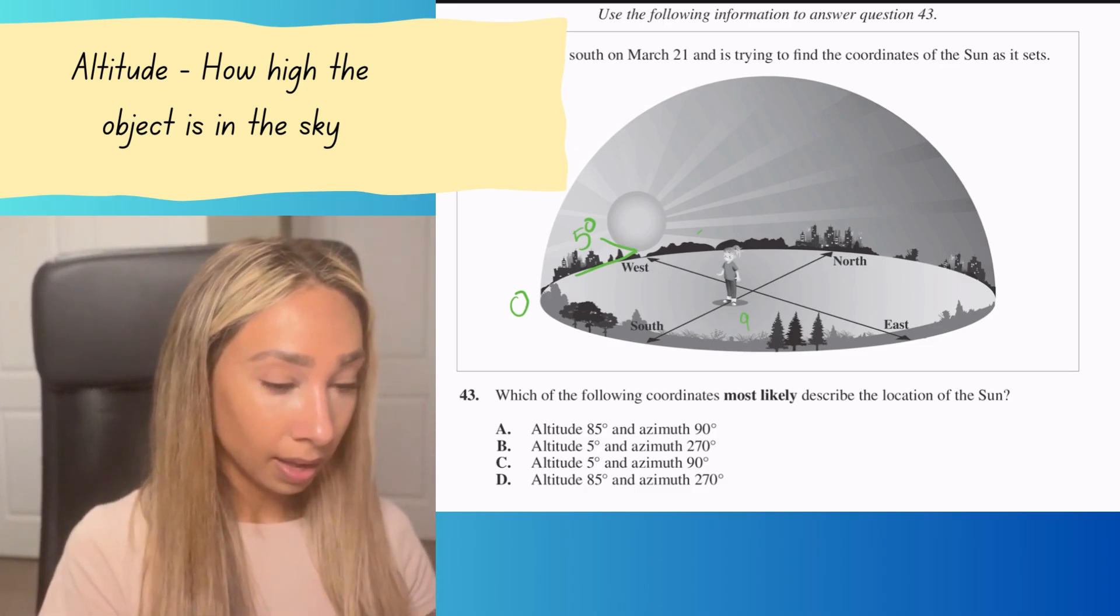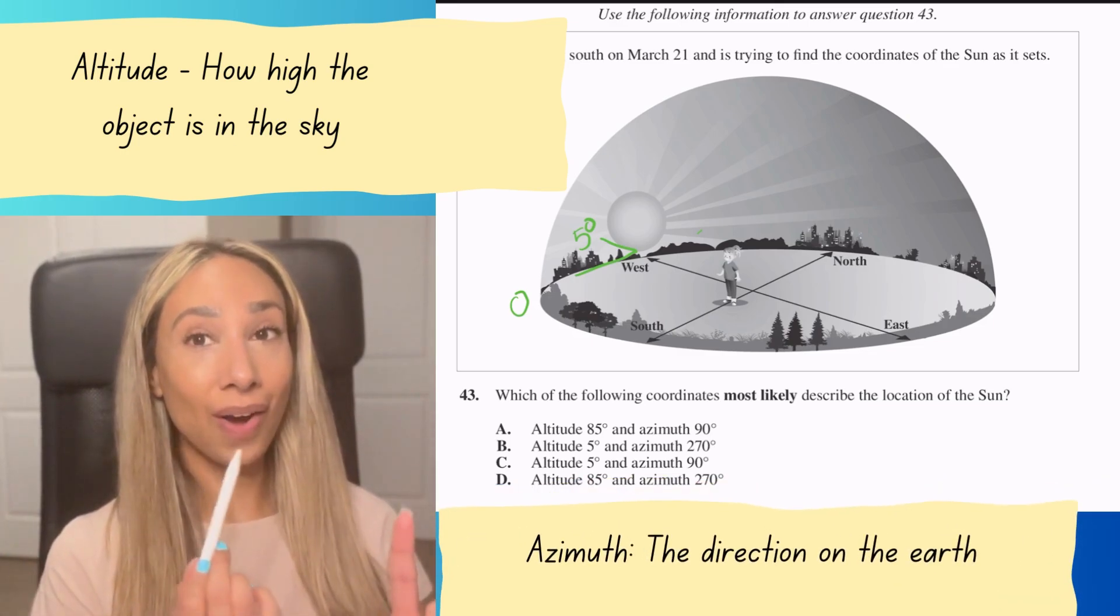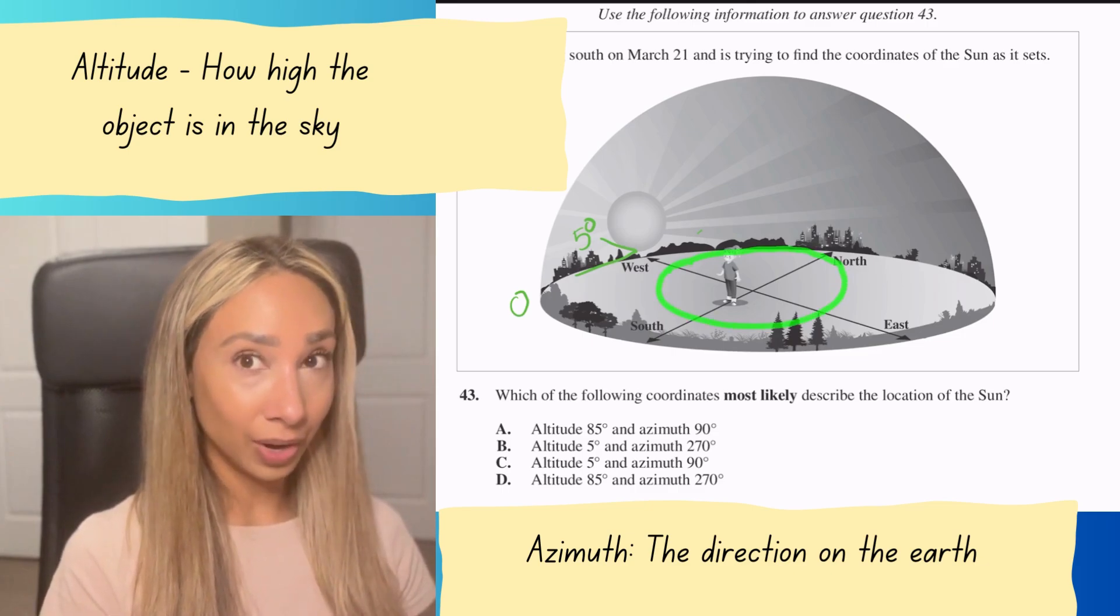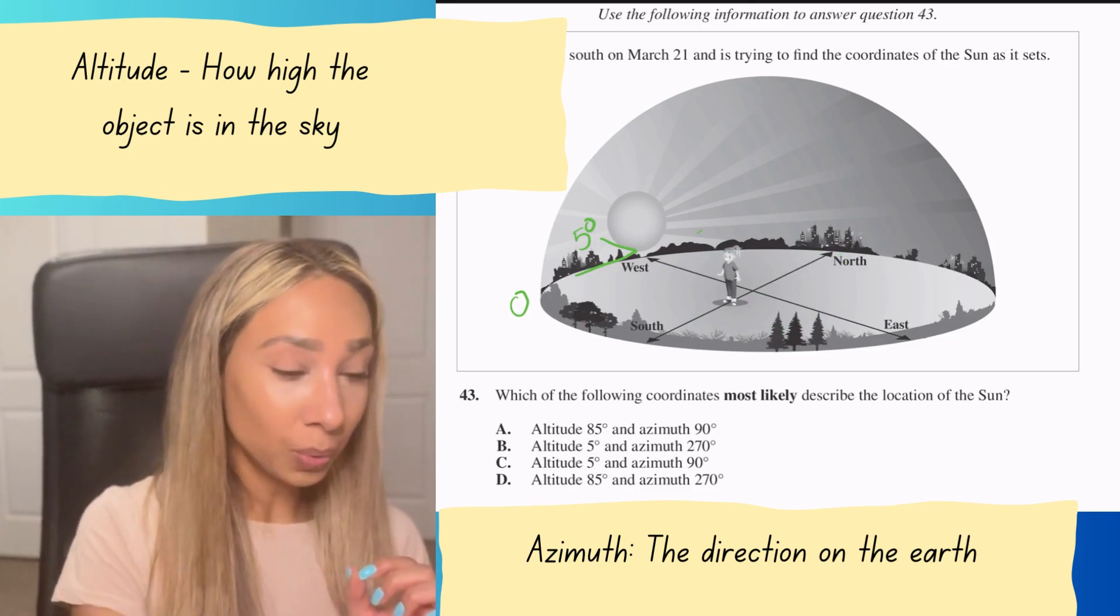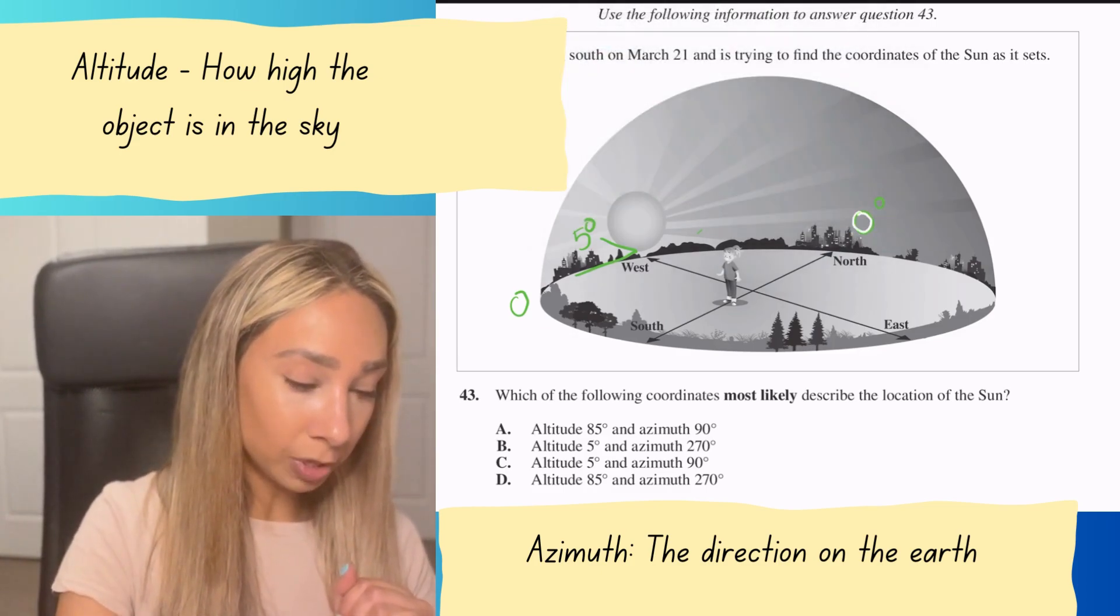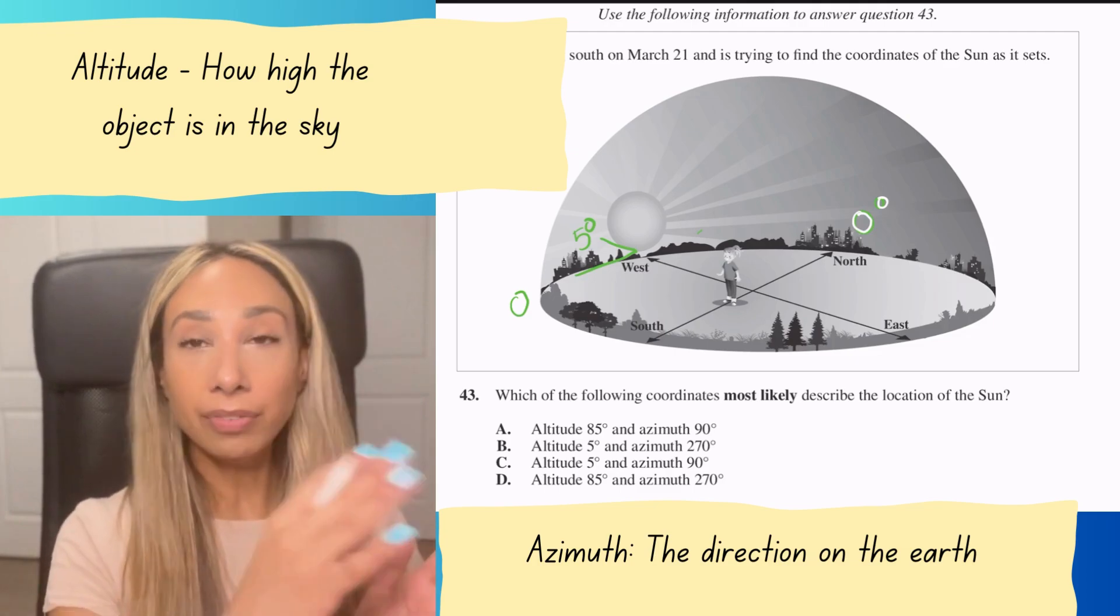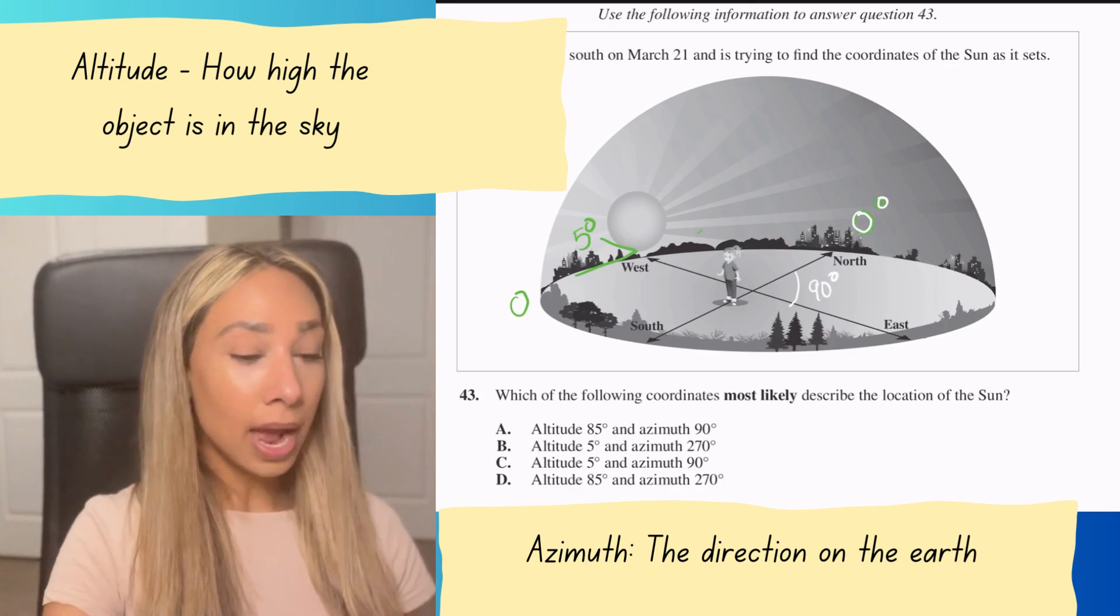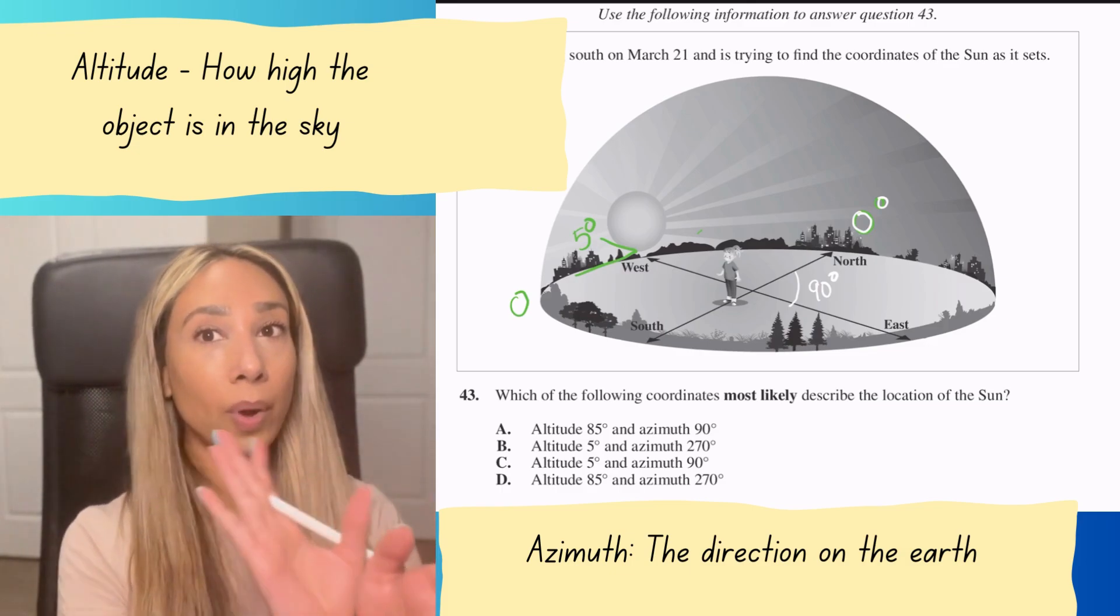Azimuth is the direction on the earth. Think of a flat surface looking at the direction of the earth. The trick is that north is zero degrees. This portion here is zero degrees. Just like math class, every quarter turn is 90 degrees. From here to here will be 90 degrees.